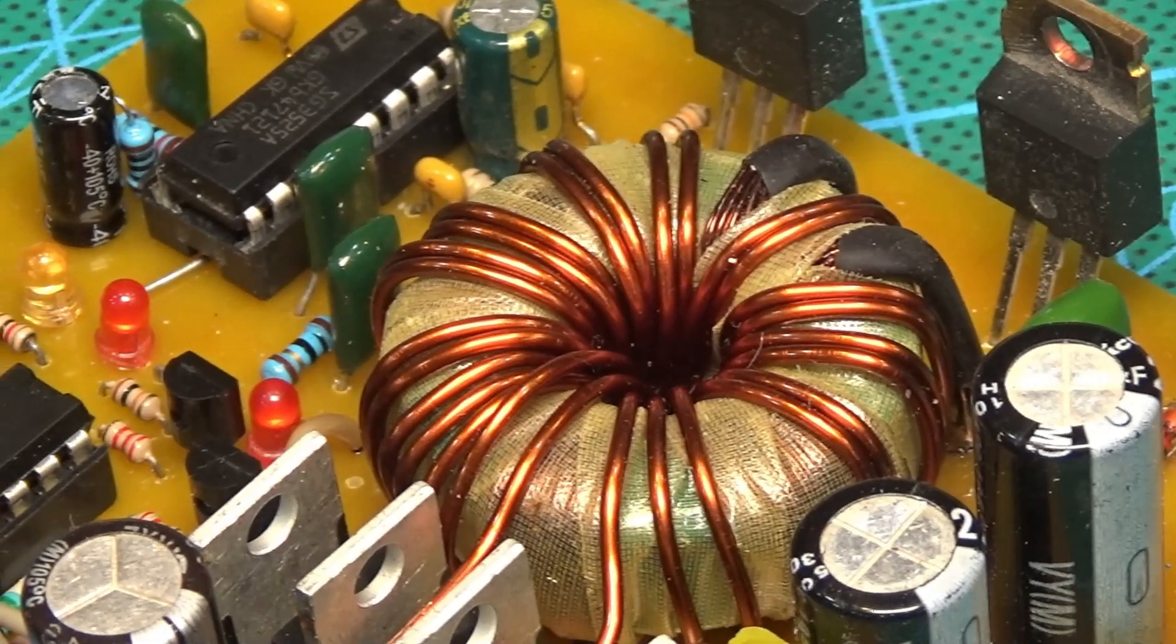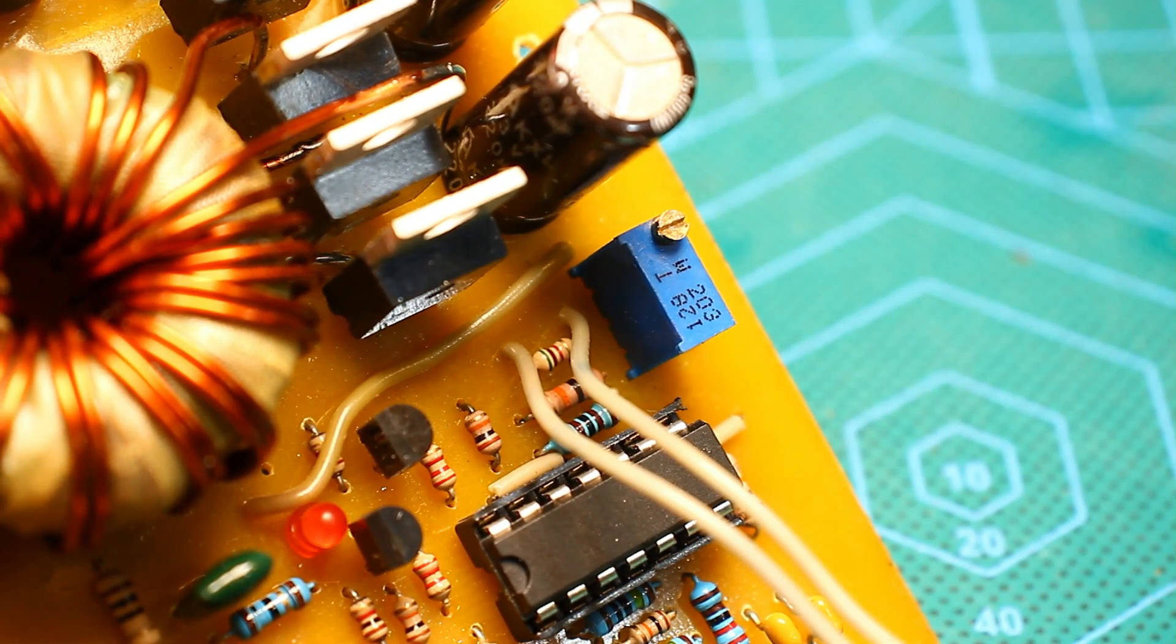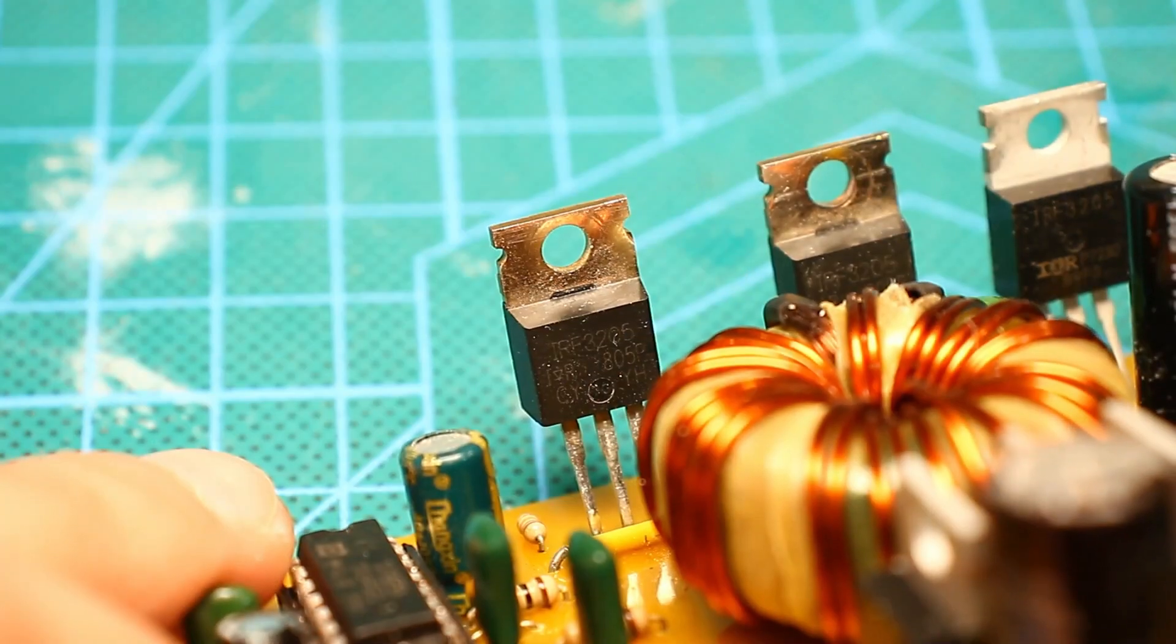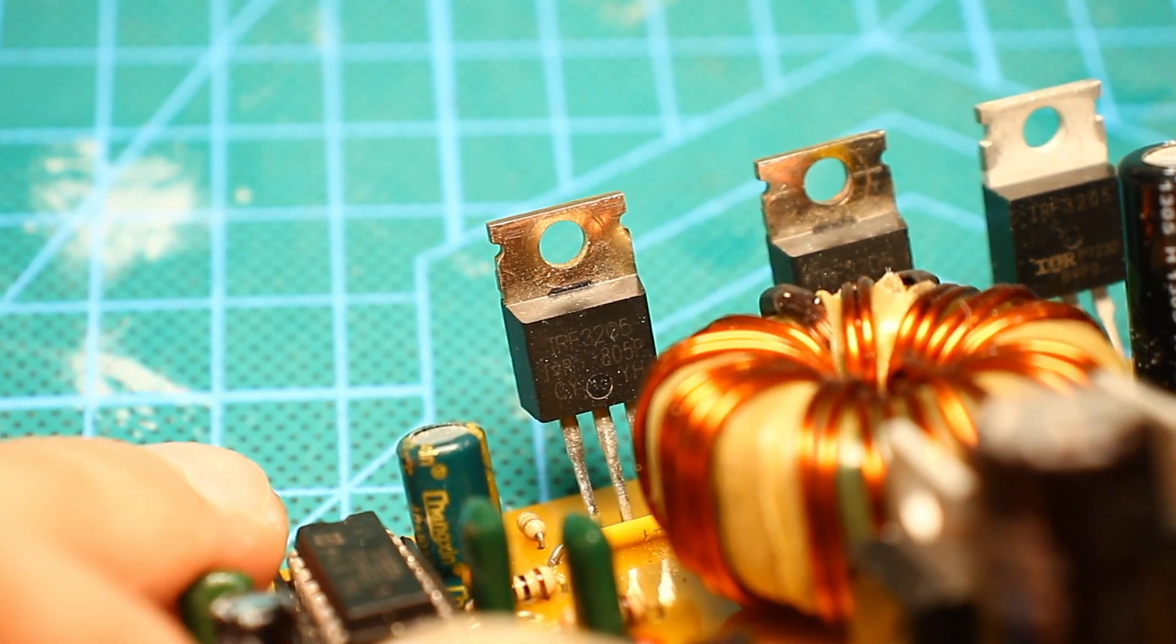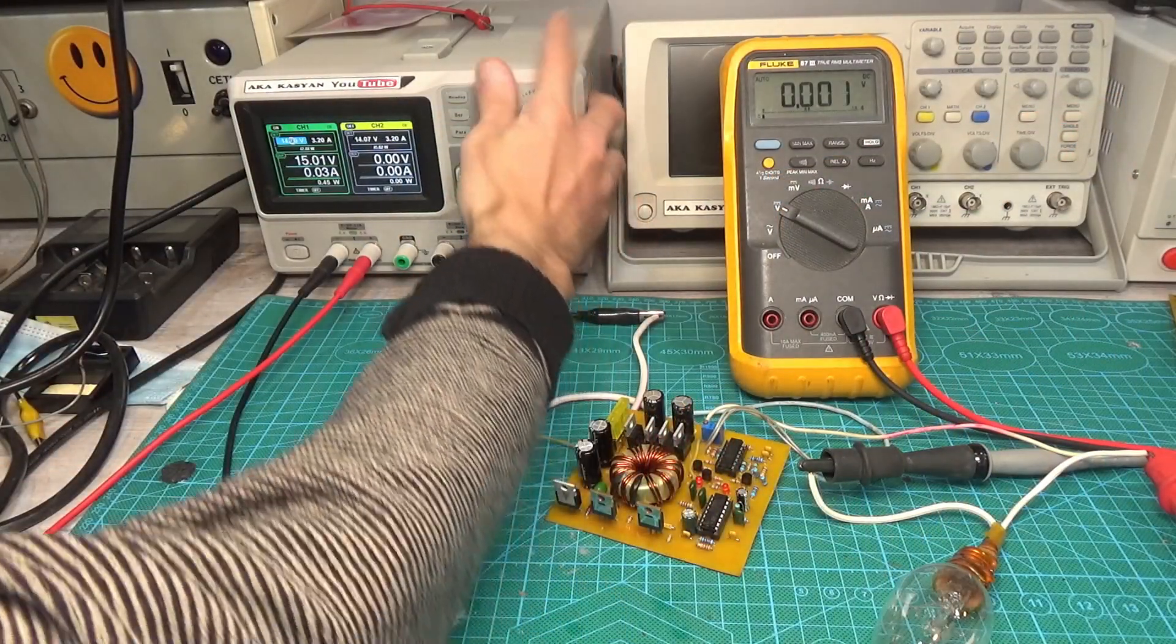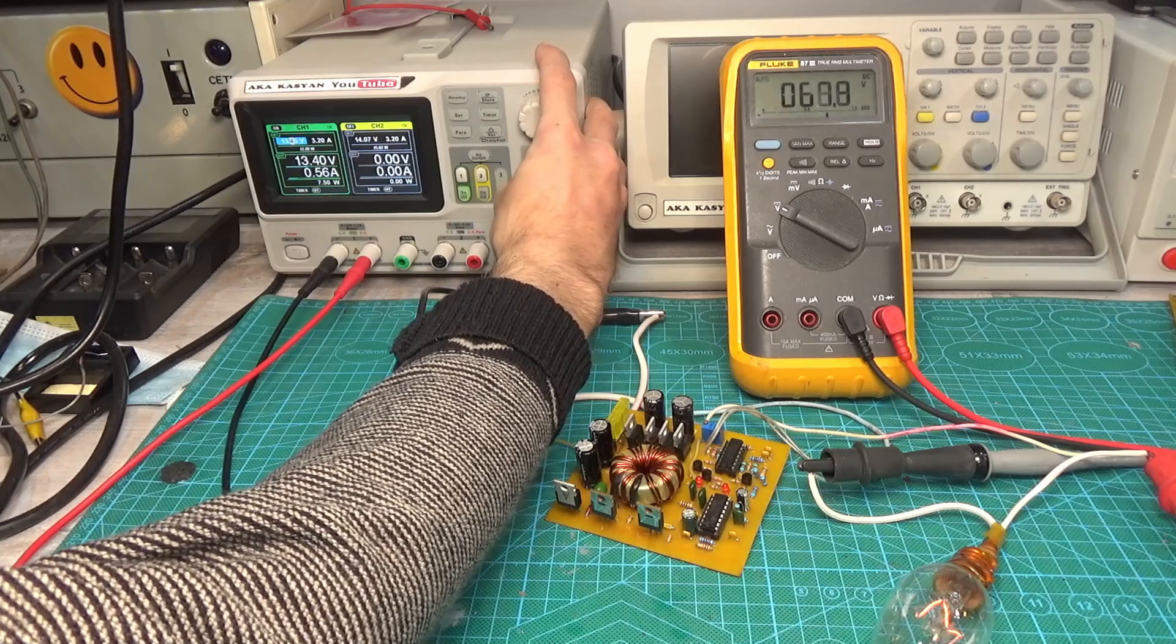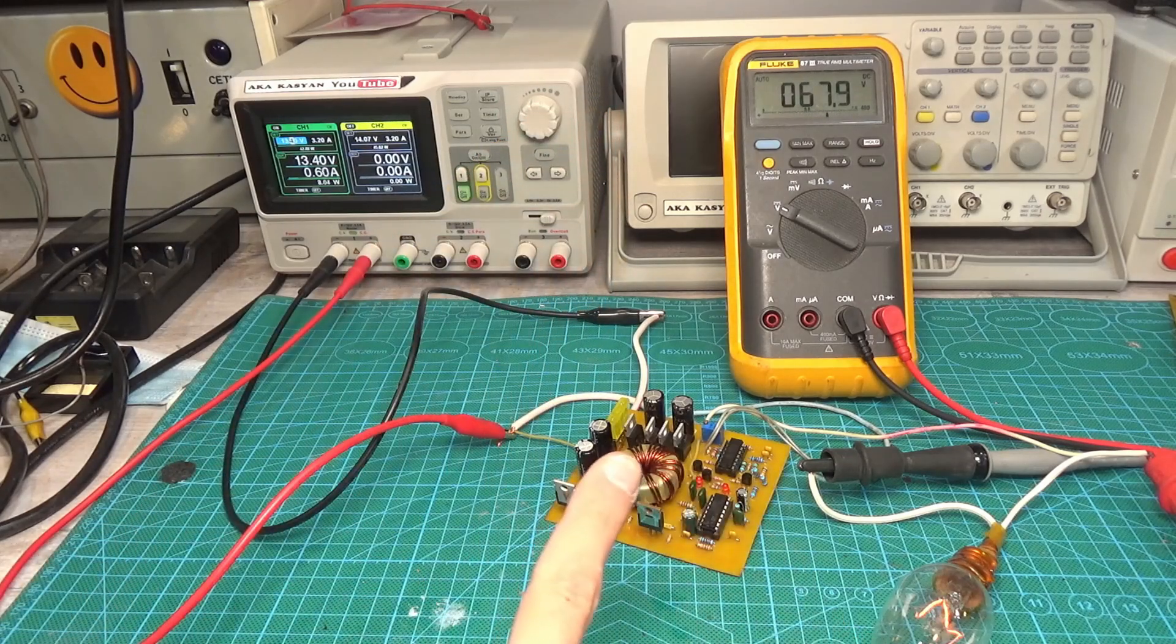When the voltage rises, the protection will not reset until the hysteresis threshold is exceeded. That is, the supply voltage will not be 0.5 volt higher than the voltage at which the protection worked. The same is in the case of over-voltage protection. Only the switching hysteresis in this case is about 1 volt.